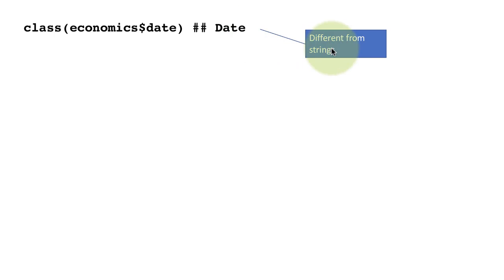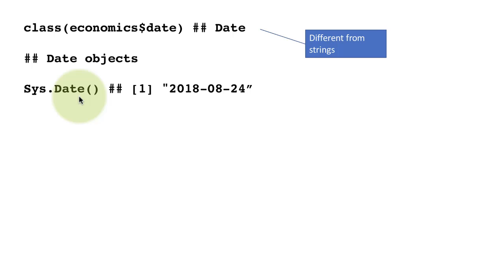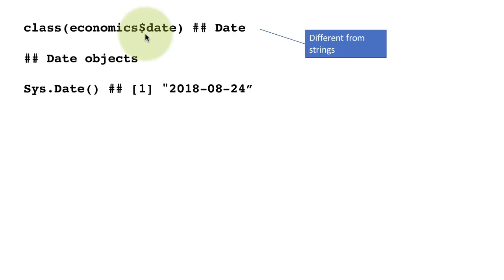Dates are different from strings. Date objects — for example, if you want to get today's date, you can do sys.Date() with capital S and D. It's a function and the system will print out today's date. Many times you want to do computations on today's date — for example, you have somebody's date of birth and you want to find out how old they are.